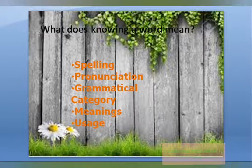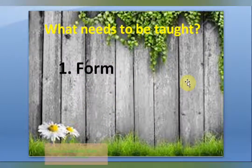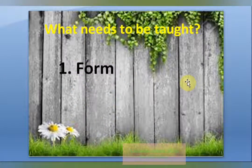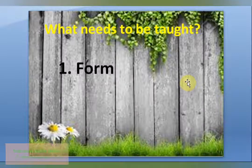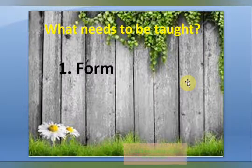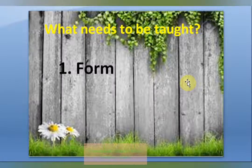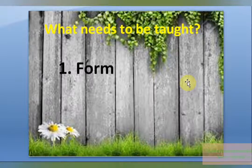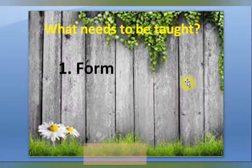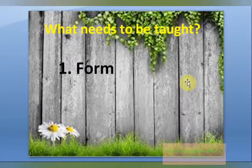Next, what needs to be taught? Whenever someone is teaching vocabulary to students, there are certain things that need to be covered. The first one is form — pronunciation and spelling. The learner has to know what a word sounds like and how it looks, so both spelling and pronunciation are important aspects that need to be accurately presented and learned.